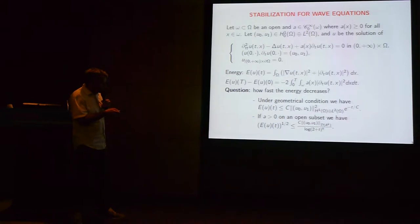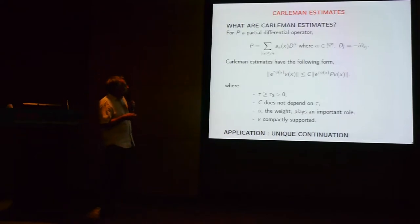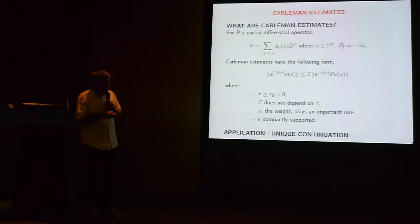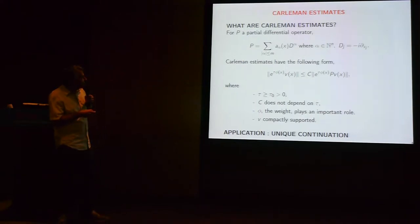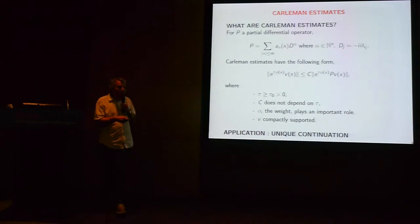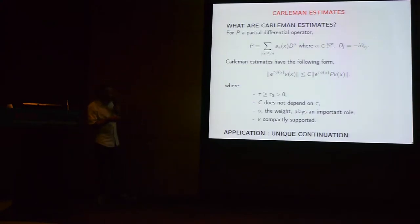In both theorems we obtain the result by Carleman estimates. But first I must explain what a Carleman estimate is. We consider P, a partial differential operator of order m. A Carleman estimate is an estimate of the following form. For simplicity I take the L2 norm, though it is not exactly L2 in the full statement — but for this introduction I keep L2 norm.